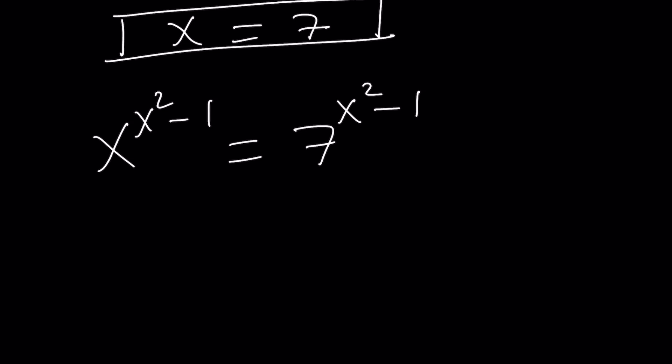When you solve this equation, you got x equals 7 as a solution. Correct? Yes. But now, you can substitute it and let's see what happens. If you replace x with 7, does that really work, right? It may not. 7 to the power x squared minus 1, which is going to be 48, equals 7 to the power 48. Wow. Amazing, right? Beautiful. It works. Yes, of course.